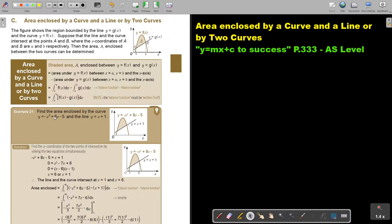Let's look at an example. Find the area enclosed by the curve and the line. Now first you have to find the points A and B, the points of intersection. So solve the two, find the X coordinates of the two points of intersection by solving the two equations simultaneously.